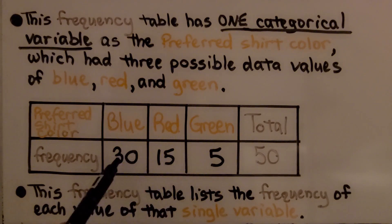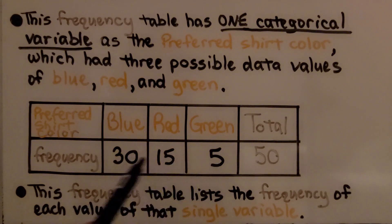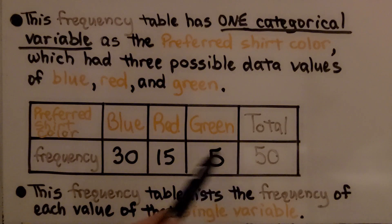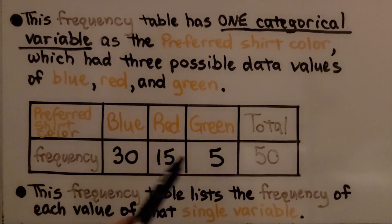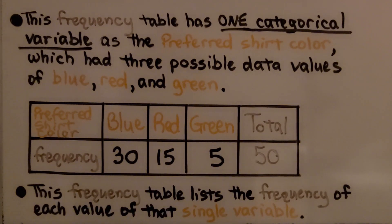The amounts of blue, red, or green — and the total — are quantitative data. We'll talk more about quantitative and categorical data at the end of the video.